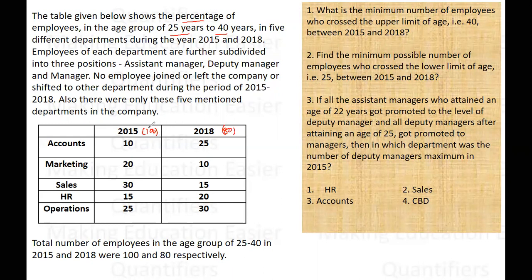Since in 2015 the total employees are 100, the number would be equal to the percentage given. In Accounts there would be 10 employees in this age bracket. In Marketing there would be 20. In Sales, 30. In HR they are 15, because 15% of 100 is 15, and in Operations it is 25% of 100 which is 25.